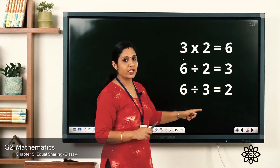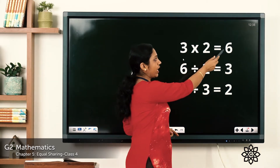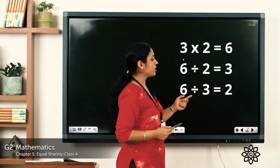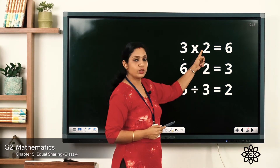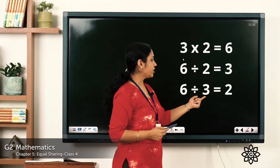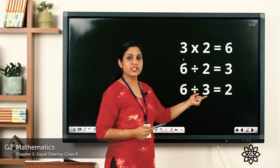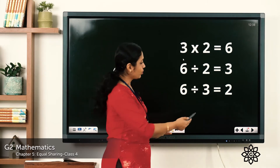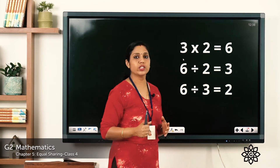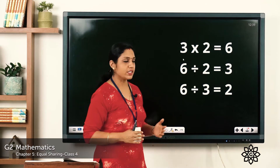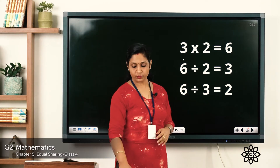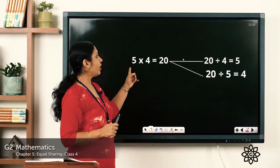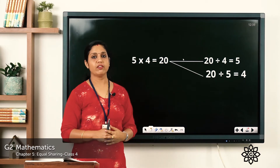Next, 6 divided by 3 — we have taken the number 3, so we need to get 2. Say the table of 3: 3 ones are 3, 3 twos are 6 — so we write 2 here. 2 times 3 is equal to 6, confirming 6 divided by 3 is equal to 2.